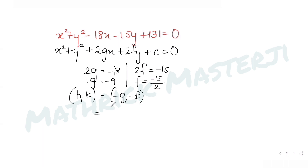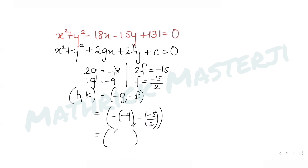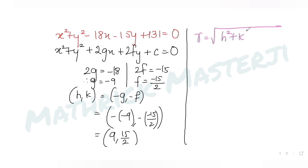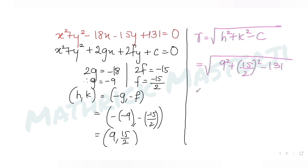The center of the circle (h, k) is given by (-g, -f). So minus g gives us -(-9) = 9, and minus f gives us -(-15/2) = 15/2. So the center of the first circle is (9, 15/2). Now I find the radius, which is given by √(h² + k² - c), where h = 9, k = 15/2, and c = 131.